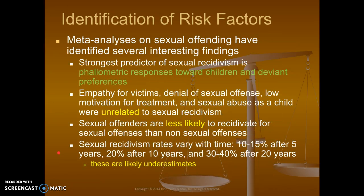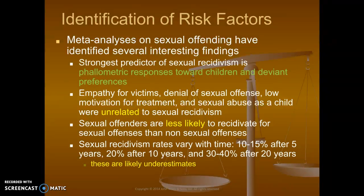Discussing risk factors — a meta-analysis on sexual offending combining multiple studies identified some important findings. The strongest predictor of sexual recidivism is phallometric responses towards children or deviant preferences. As much as we couldn't make guilt or innocence statements based on that alone, it was the strongest indicator of whether they would recommit crimes. Interestingly, empathy for victims, denial of the sexual offense, low motivation for treatment, and sexual abuse as a child were all unrelated to sexual recidivism.